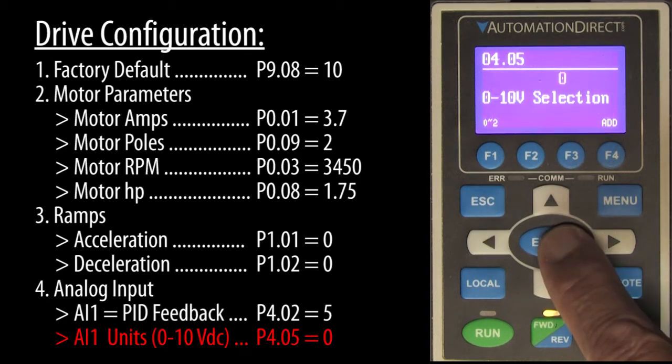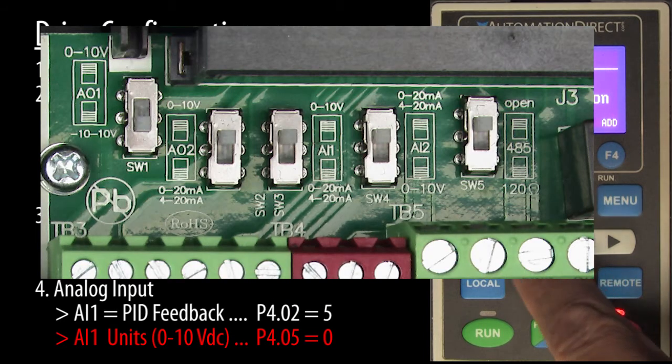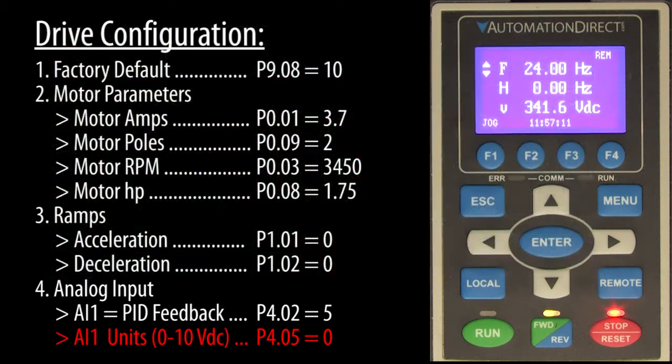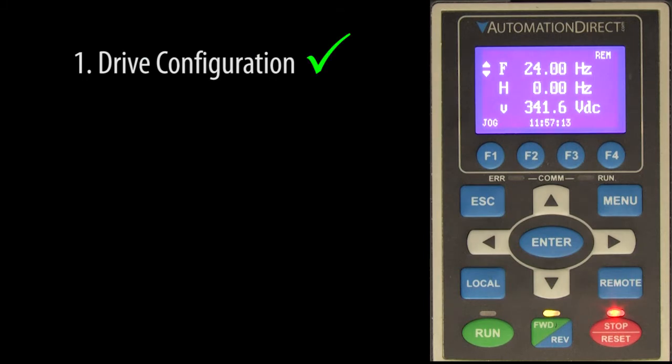We also need to make sure that the terminal board switch for analog input 1 is set to volts and not to current. Great, we're done with the basic drive setup.